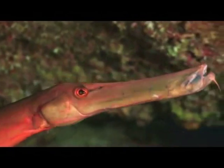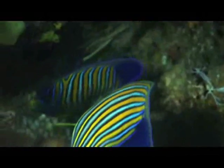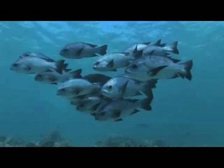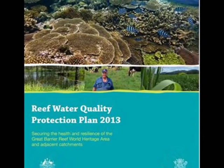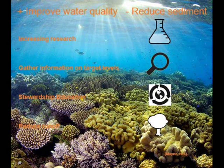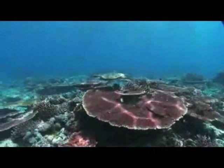There is current government legislation in place to regulate activities on and around the Great Barrier Reef, along with several plans of action that set out short, medium, and long-term strategies to manage and track sediment levels. The current Reef Water Quality Protection Plan 2013 involves the Australian and Queensland governments along with local communities and stakeholders. The plan aims to improve water quality and reduce sediment levels by increasing research, identifying and monitoring priority areas, gathering information on target levels, raising awareness through stewardship education, and reducing catchment runoff by improving land management and agriculture practices.